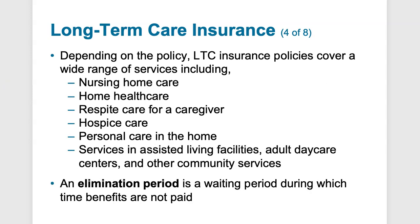Long-term care insurance policies should ideally cover nursing home care, home health care, respite care for caregivers, hospice care, personal care in the home, and assisted living services and facilities. Assisted living is not a nursing home, but a place where additional support and help is available for residents who are not fully independent. Depending on the policy, the elimination period — a waiting time where benefits are not paid — may be 10, 20, or 90 days before the plan kicks in. The longer the elimination period, the cheaper the insurance will be.